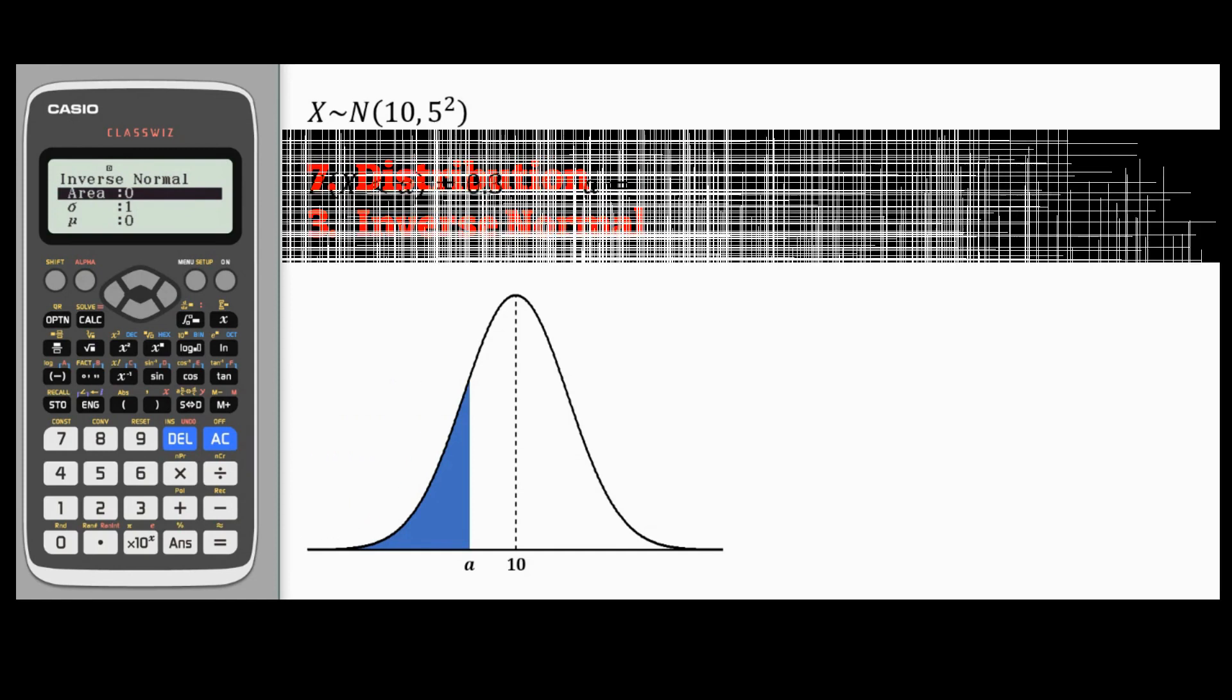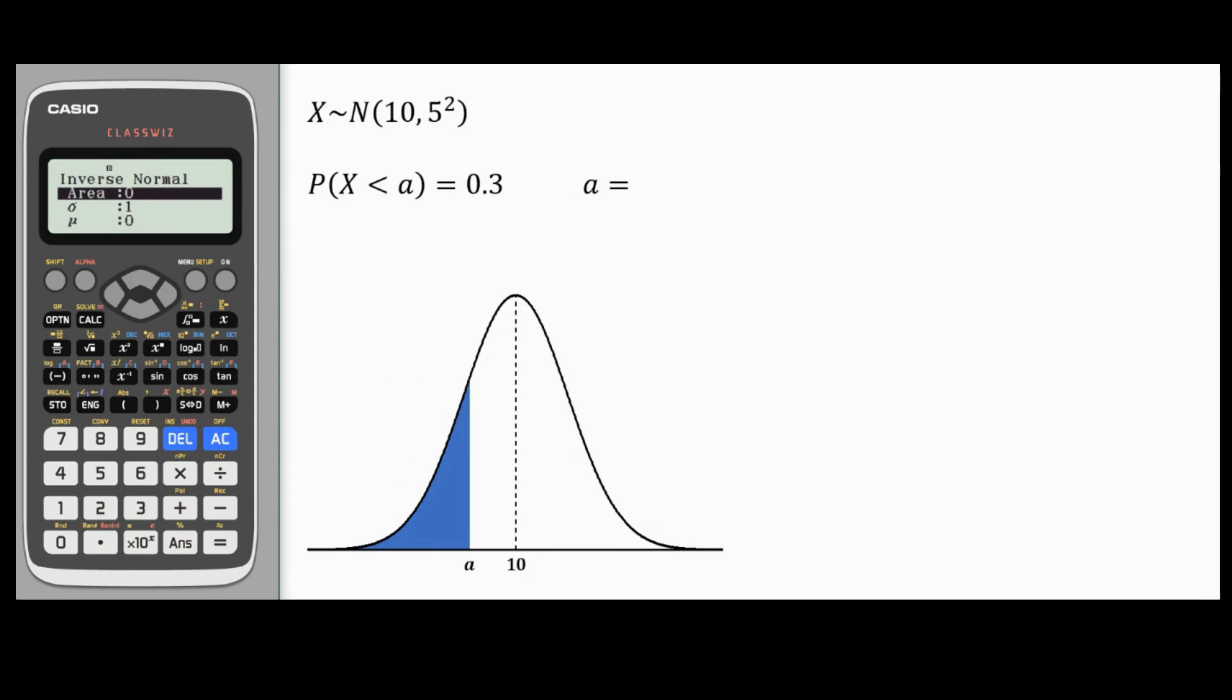This time I have three inputs: Area, sigma, and mu. As you can see, sigma is 5 again. Mu is 10. So I'm left with area. Area is the probability to the left of my cutoff point. In this example, it's given as 0.3. Let's enter these equals and now let's hit the equal button and we'll get our A value, which is 7.38 to 3 significant figures.